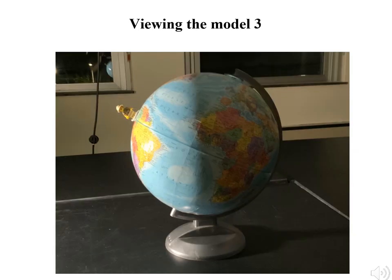Here is a third and last example seen from the side and configured so that the model person would be at midday. This position also has the north pole in darkness and the south pole in daylight, both at the same time, because the north pole is tilted away from the light source, whereas the south pole is tilted towards it.